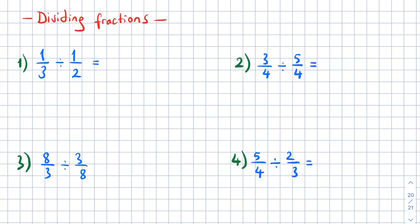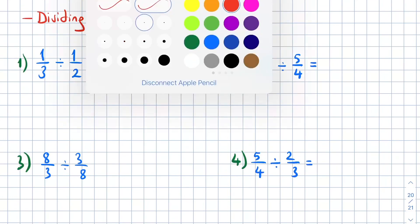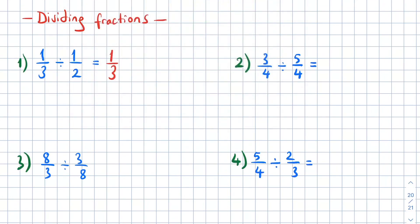When we divide fractions, we are going to keep the first fraction the same, then we are going to change the operation into multiplication, then we are going to flip the second one. So one over three times two over three. The result is two over three.